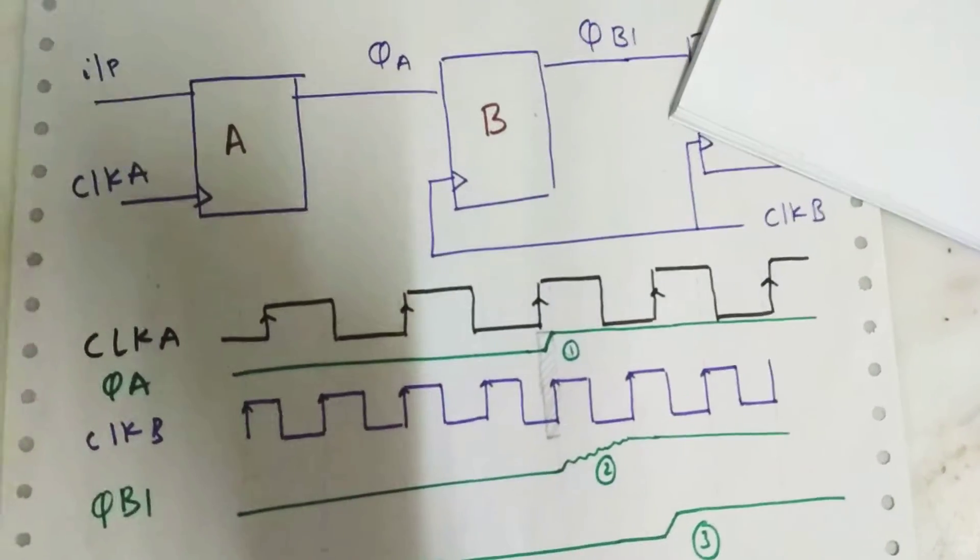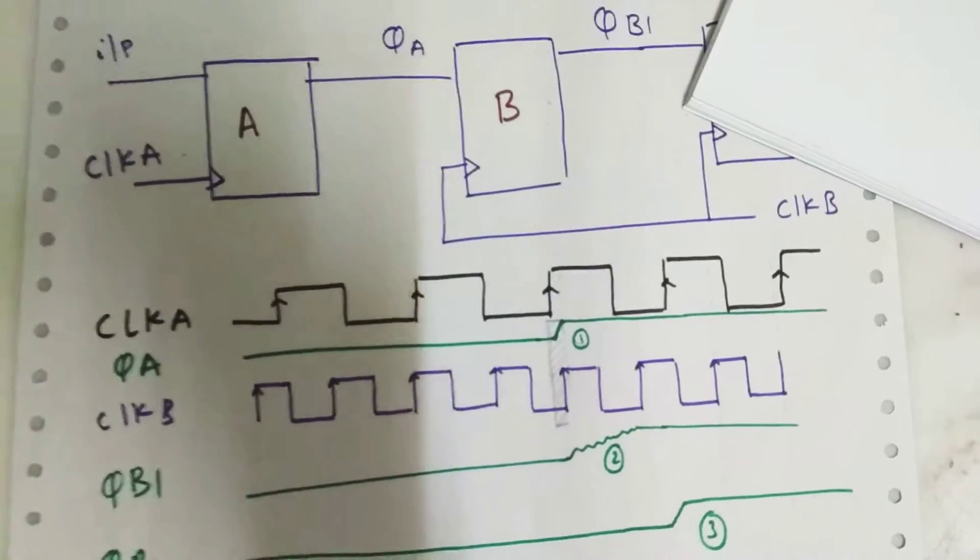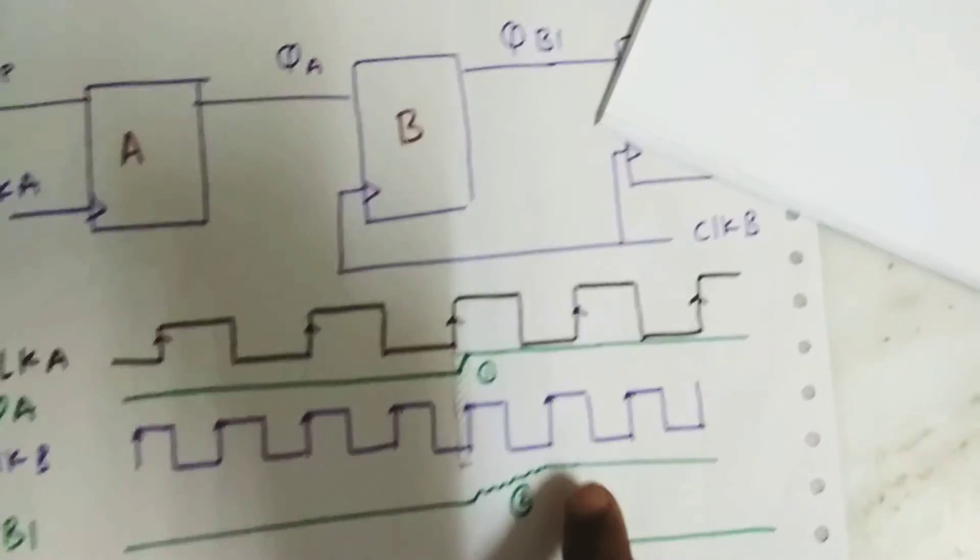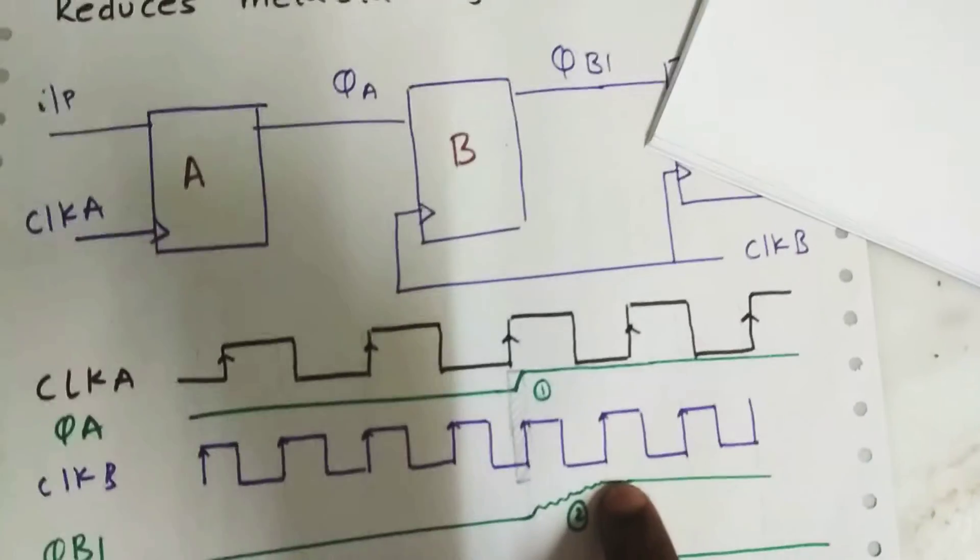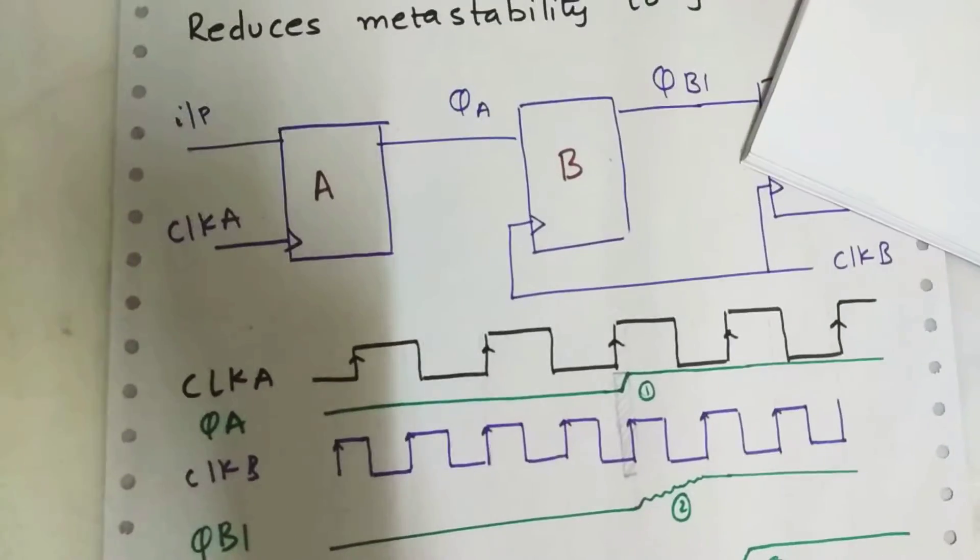What's that issue? It will cause a metastability - unstable output which might result in a zero or one. Here it has resulted to one after one long clock period. So how to avoid this?